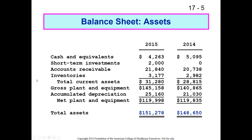Balance sheets have two components. The left half includes assets, starting with short-term or current assets like cash, short-term investments, accounts receivable, and inventories. The definition of a current asset is something you can convert into cash or expect to use up within a year. Then you have long-term assets like gross plant and equipment, or property, plant and equipment — the physical stuff the organization owns that will last more than a year.